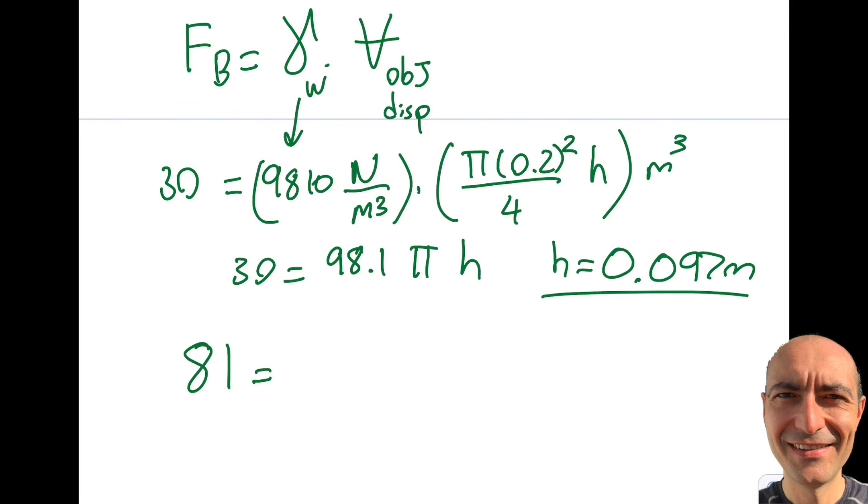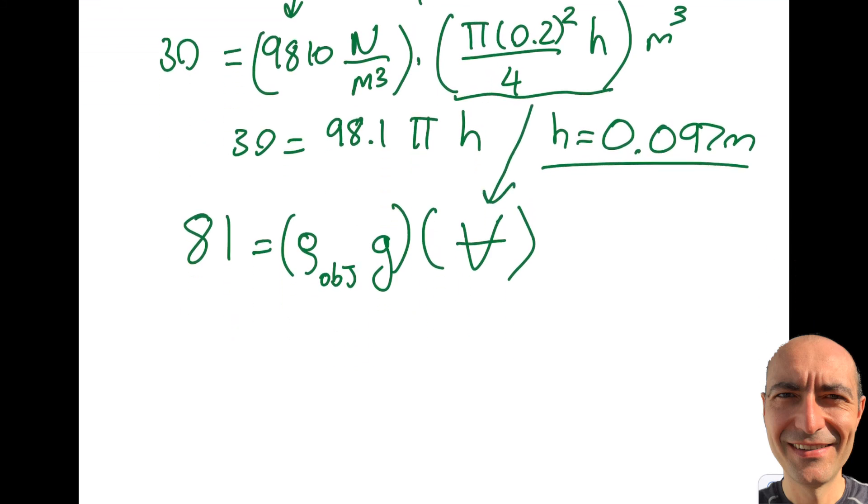81 is equal to... As you see here, this is going to be the specific weight of what I'm dealing with. So basically the density of the object times the gravity times the volume. And you do see that this volume is over here. It's the same. And g is 9.81.